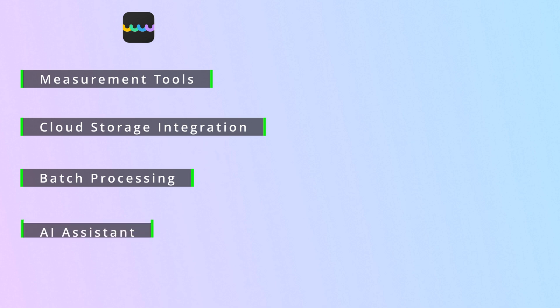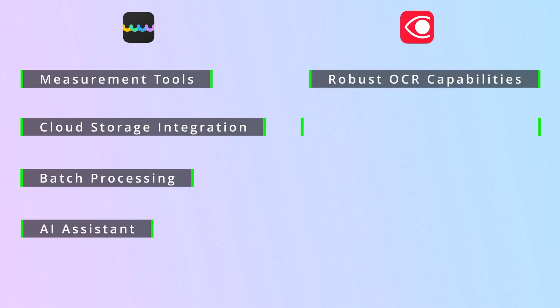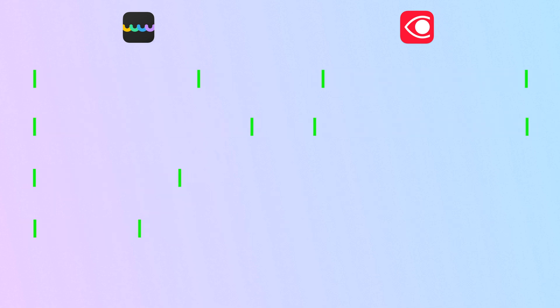Let's break down the key features of both tools. UPDF shines with its range of functionalities, including measurement tools, cloud storage integration, batch processing, and even an AI assistant for enhanced productivity. Meanwhile, ABBYY FineReader is praised for its robust OCR capabilities and supports over 200 languages.